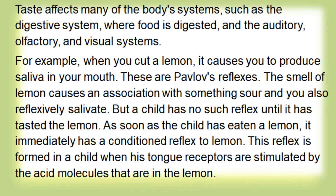Taste affects many of the body's systems, such as the digestive system, where food is digested, and the auditory, olfactory and visual systems. For example, when you cut a lemon, it causes you to produce saliva in your mouth. The smell of lemon causes an association with something sour, and you also reflexively salivate. But a child has no such reflex until it has tasted the lemon. As soon as the child has eaten a lemon, it immediately has a conditioned reflex to a lemon. This reflex is formed when the tongue receptors are stimulated by the acid molecules that are in the lemon.